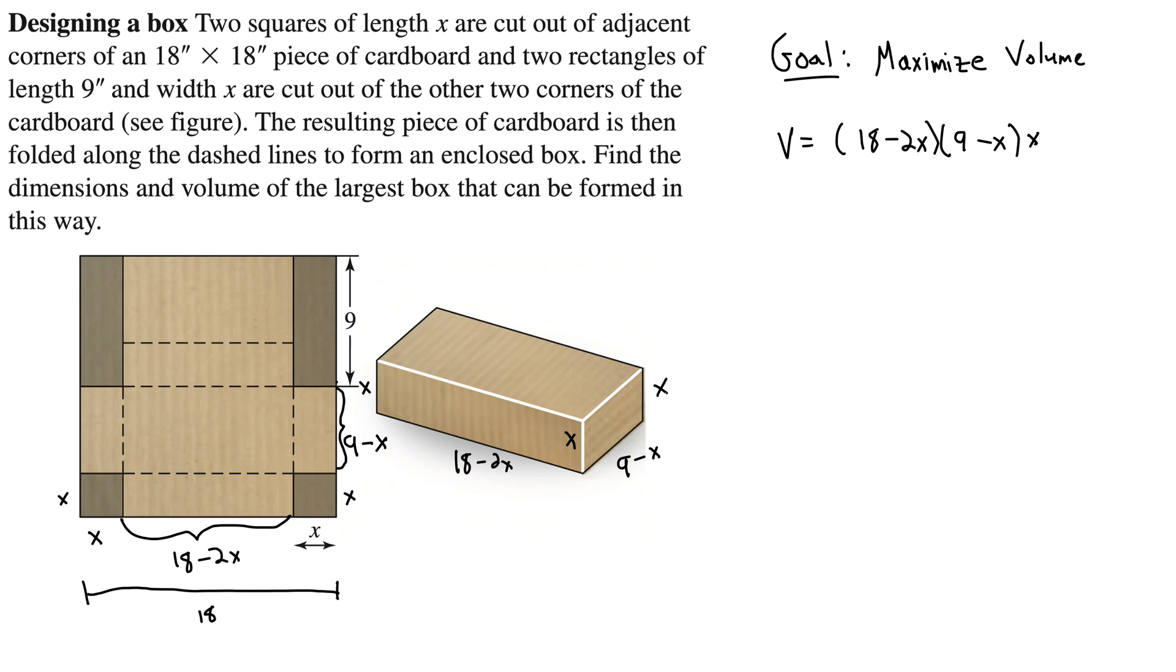Let's take the derivative of this volume and see what we get. Well, I really don't want to use a triple product rule, so I'm going to distribute some things here so I can just take a simpler derivative. So I'm going to distribute this X through. That gives me the 18 minus 2X is still holding on in the front. And we have times 9X minus X squared.